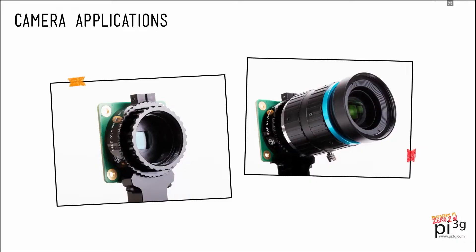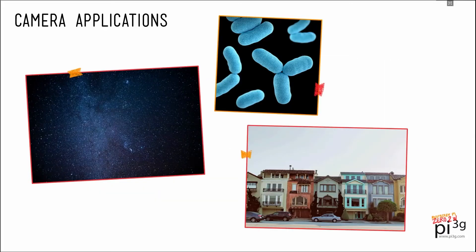We also have video input on the Zero2W, so there are many camera applications as well. Using the HQ camera from Raspberry Pi, you could hook up telescopes, microscopes, or just regular lenses. So anything is possible — from watching the stars, watching the microbes, to just watching your neighbors.